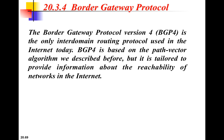BGP has got two variations. It has a variation for external interdomain routing which is called External BGP, and this type of BGP will be installed on the routers at the borders of the system. Then you have the other variation called Internal BGP, IBGP, and this will be installed on all routers in the network — internal, external, all of them will have IBGP.